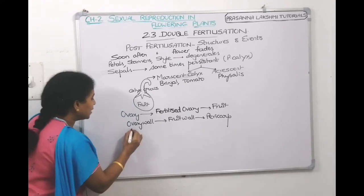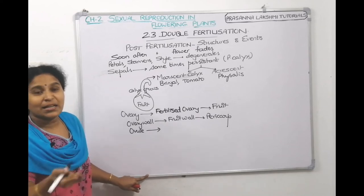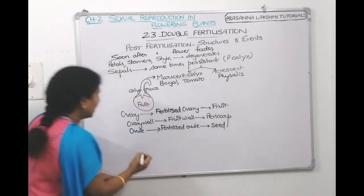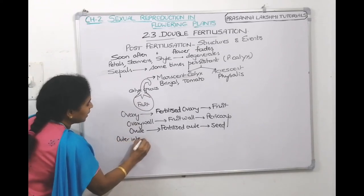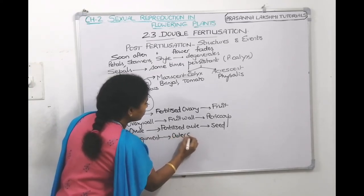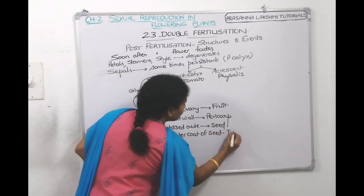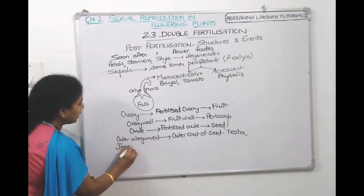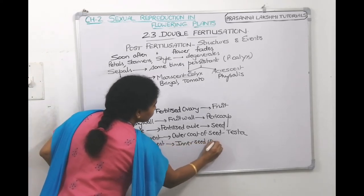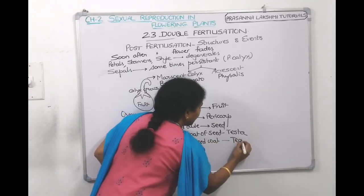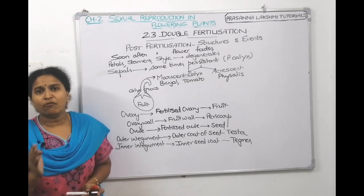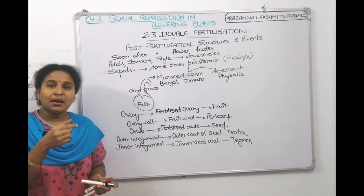After fertilization, the ovary becomes the fruit. The ovary wall becomes the fruit wall, which is named the pericarp. Inside the ovary lies the ovule. The fertilized ovule is called a seed. The outer integument of the ovule becomes the outer coat of the seed, called the testa. The inner integument becomes the inner seed coat, called the tegmen.